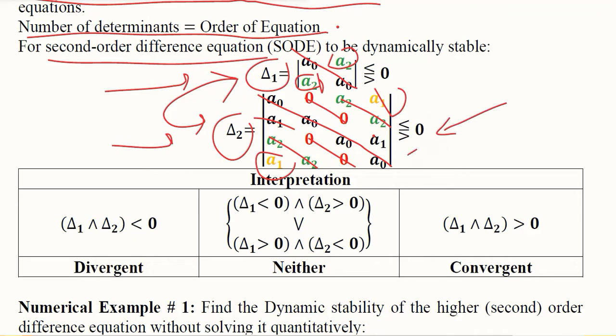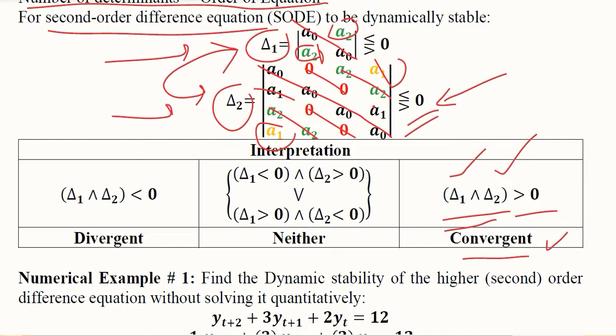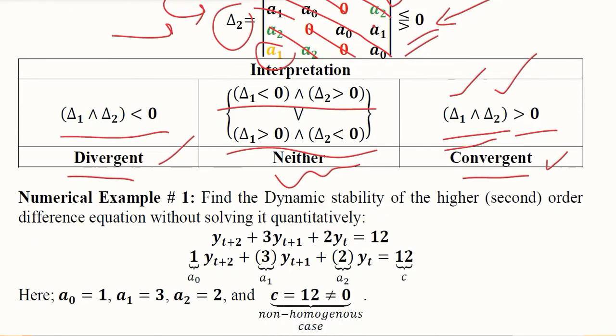Its value is compared with zero. If all of these determinants are greater than zero, we have a convergent case. If both are negative, there is a divergent time path. If one is positive and the other is negative, neither convergence nor divergence will hold.